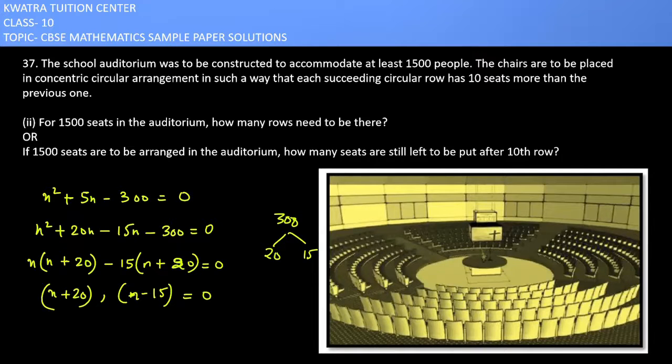You have to find the value of n from it. n can never be negative, it will always be positive. If n plus 20 equals 0, n would be minus 20. n is not equal to minus 20 because it is negative. And n minus 15 equals 0, so n is 15. Yes, the number of rows it would have is 15.